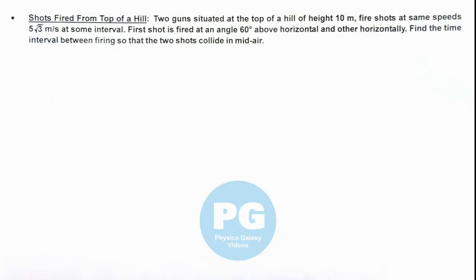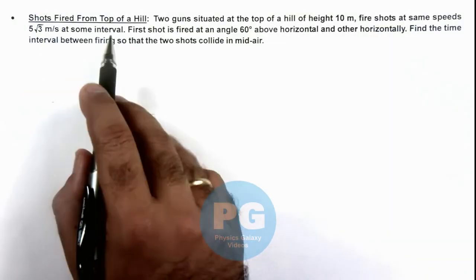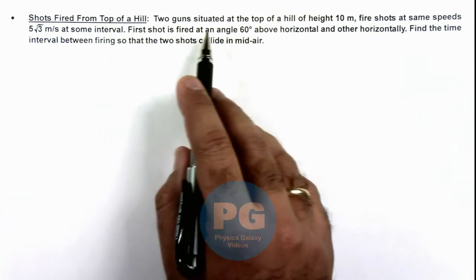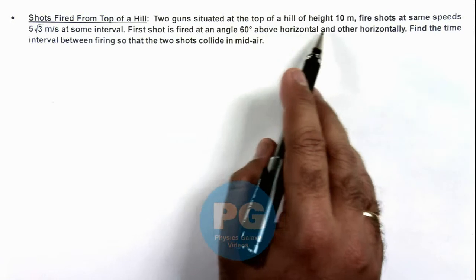In this illustration we'll see a situation when shots are fired from top of a hill. It is saying 2 guns situated at the top of a hill of height 10 meter fires.